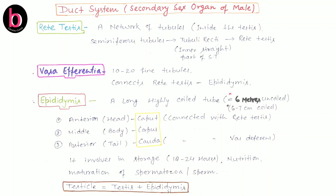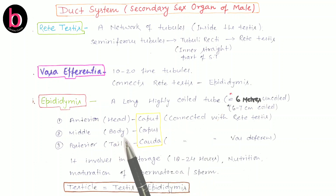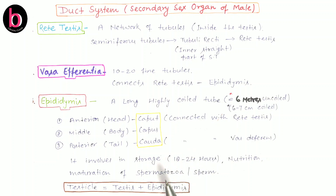The epididymis has three parts: anterior, middle, and posterior. The anterior part is also known as head or caput, and it connects with rete testis. The middle part is called body or corpus. The posterior end is known as tail or cauda, which connects with vas deferens. The function of the epididymis is capacitation — the physiological maturation of sperm. In the epididymis, storage, nutrition, and maturation of spermatozoa occur. Sperm stay here for nearly 18 to 24 hours.